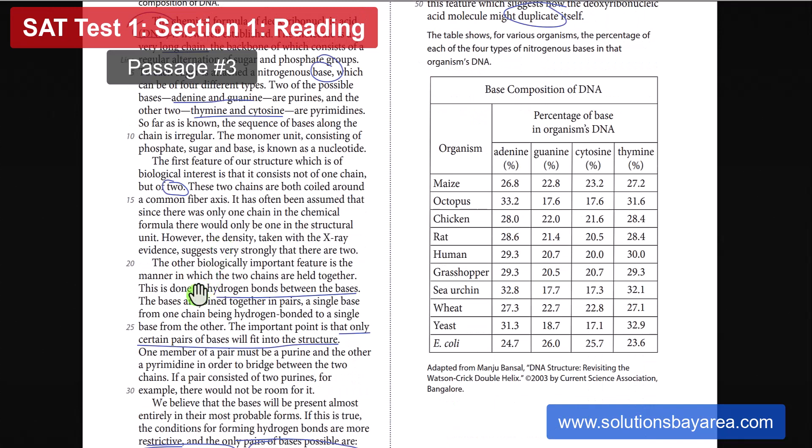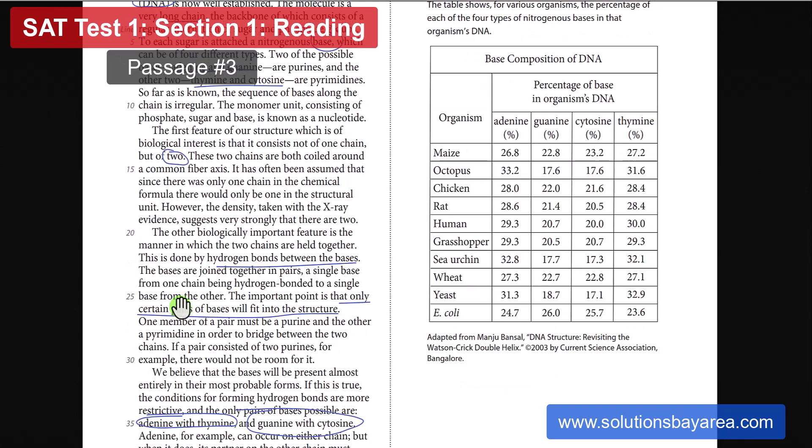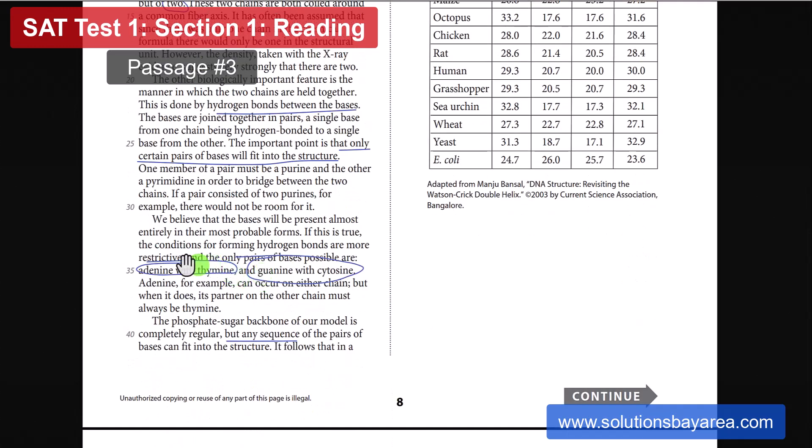Moving on down to line 22, third paragraph here. It talks about the hydrogen bonds that bond in between the bases and hold the two chains together. The important thing to note here is on line 25, that only certain pairs of bases will fit into the structure. So how does the pairing work? This is the most important thing. Again, adenine pairs with thymine, and guanine pairs with cytosine. You probably remember this from bio. This is a very important fact.